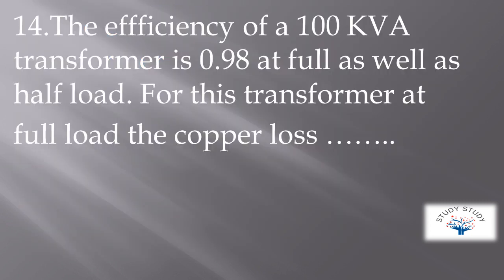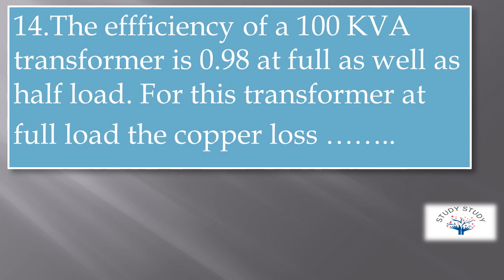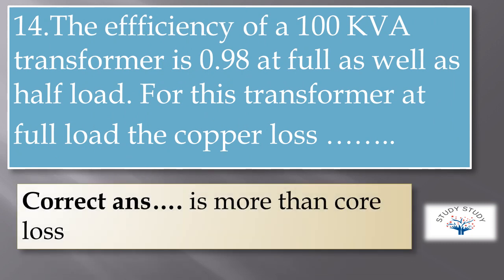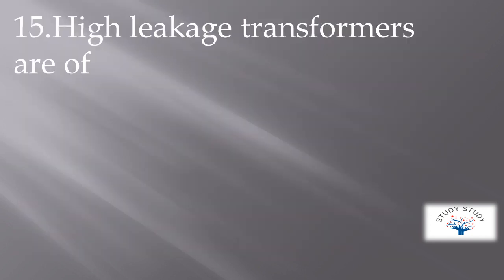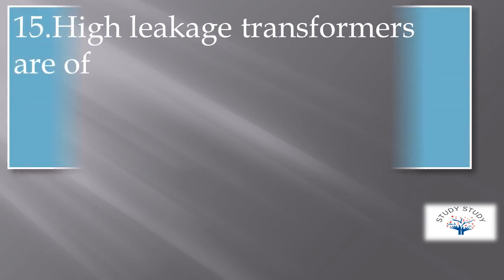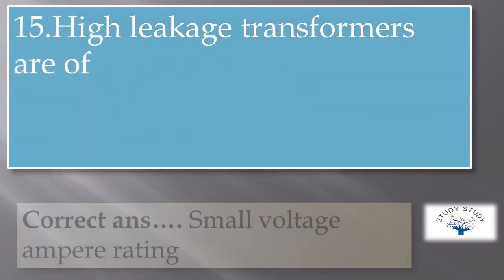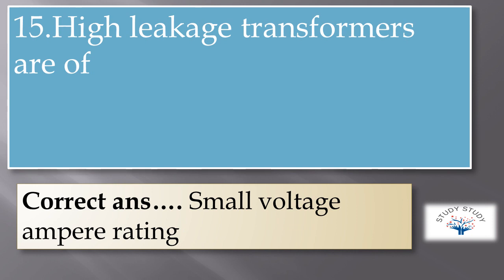The efficiency of a 100 KVA transformer is 0.98 at full as well as half load. For this transformer at full load, the copper loss is more than iron loss. High leakage transformers are of small KVA rating.